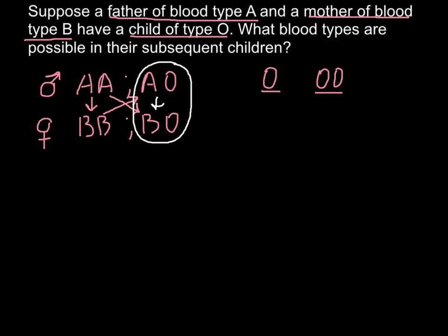So in order to find frequencies of the subsequent children's blood types, we have to build a Punnett square. So on this side, for example, we would put blood type for the father, that is AO.